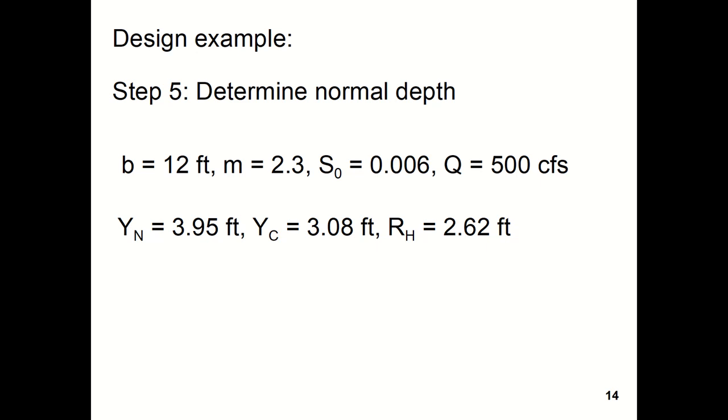Then we would determine the normal depth like we have many times in this course. So for a bottom width of 12 feet, side slope of 2.3, a bottom slope of 0.006, and 500 cubic feet per second, that gives us a normal depth of 3.95 feet, a critical depth of 3.08 feet, and a hydraulic radius of 2.62 feet.